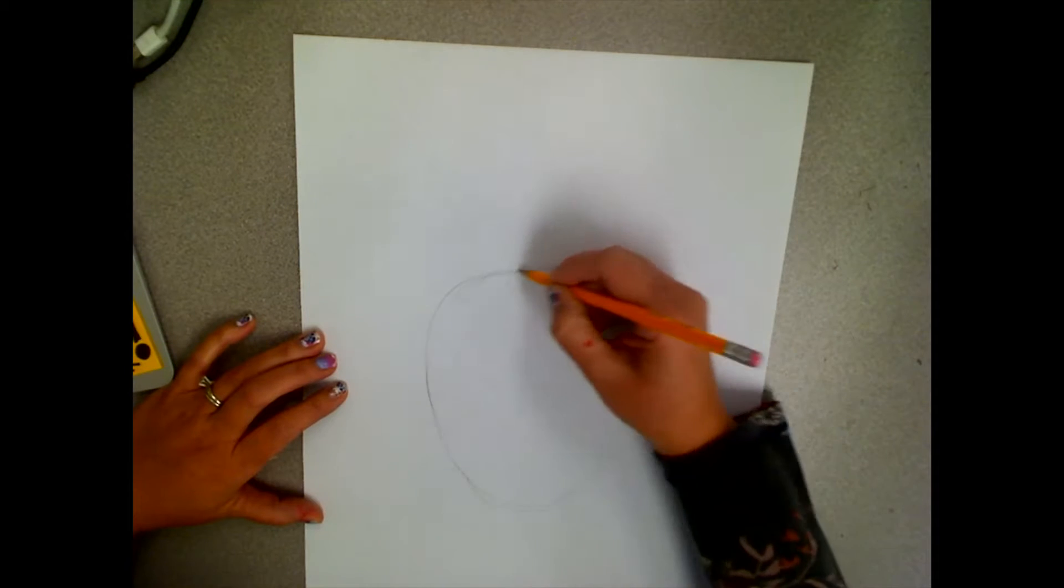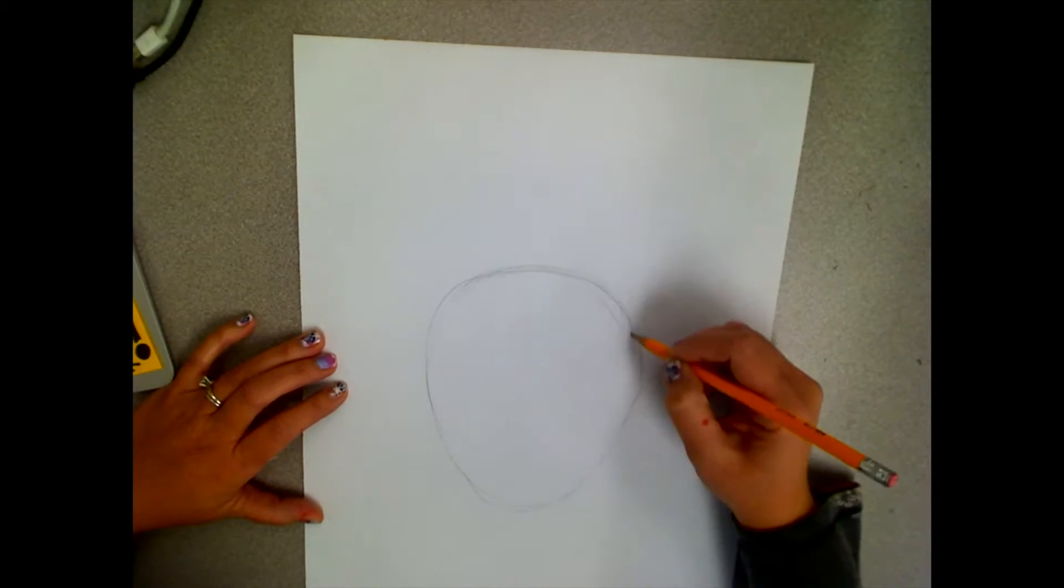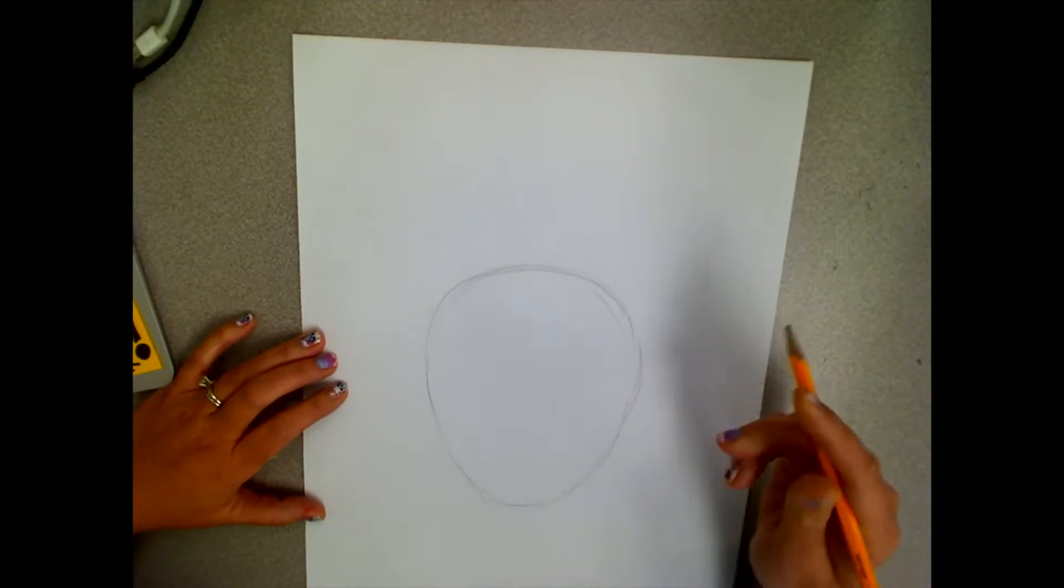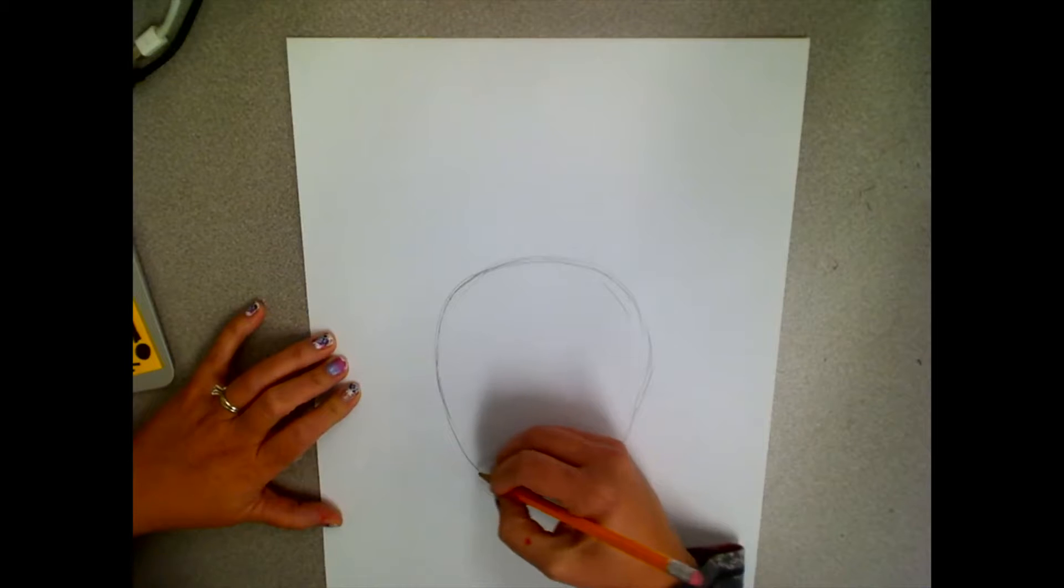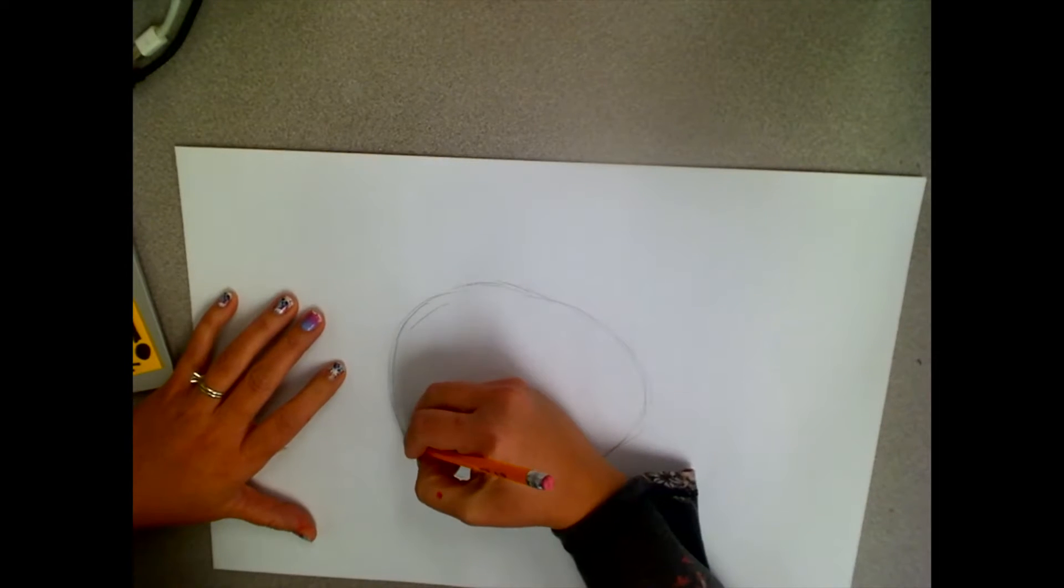Sketching means drawing lightly, making several lines until you get the right line made. Once you get the right lines made, darken the lines that you want to keep and erase the lines that you want to get rid of.